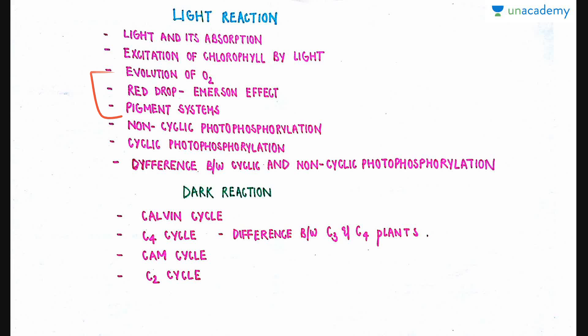Now, what actually happens in non-cyclic and cyclic photophosphorylation? How are these two photochemical processes important in light reaction? What are the various procedures and steps involved in non-cyclic and cyclic photophosphorylation? This is what I am going to talk about in this video and in the coming video. What is the importance of cyclic and non-cyclic photophosphorylation, how does it take place, and what are the byproducts of the photophosphorylation process?